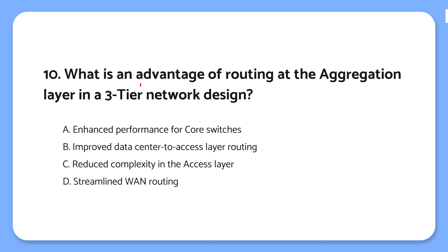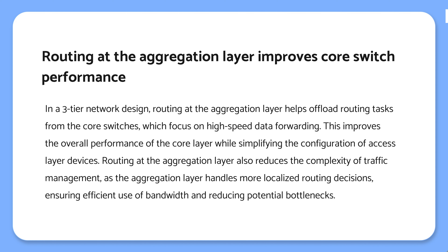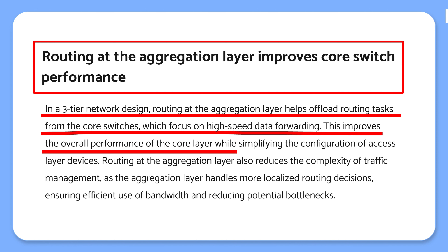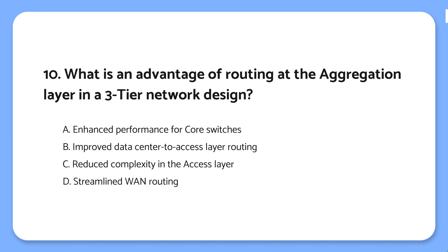Question 10: What is an advantage of routing at the aggregation layer in a 3-tier network design? The knowledge point is that routing at the aggregation layer improves core switch performance. In a 3-tier network, doing routing at the aggregation layer helps take some load off the core switches, letting them focus on high-speed data forwarding. It also simplifies the setup in the access layer, making everything run smoother. The correct answer is: by handling routing at the aggregation layer, you take the load off the core switches, letting them focus on high-speed data forwarding, which improves overall network performance.